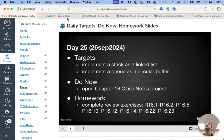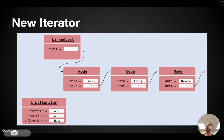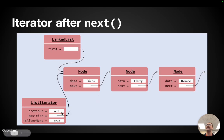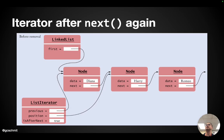Just to review, because this was challenging stuff: conceptually, here's where our iterator starts — position is null, previous is null. When position is null, it means the iterator is at the start of the linked list. When we call next, position always refers to the node we just iterated over. So position refers to Diana because we just iterated over her. Previous is still null because previous refers to the second-to-last node we iterated over. When we call next again, position refers to Harry and previous refers to Diana.